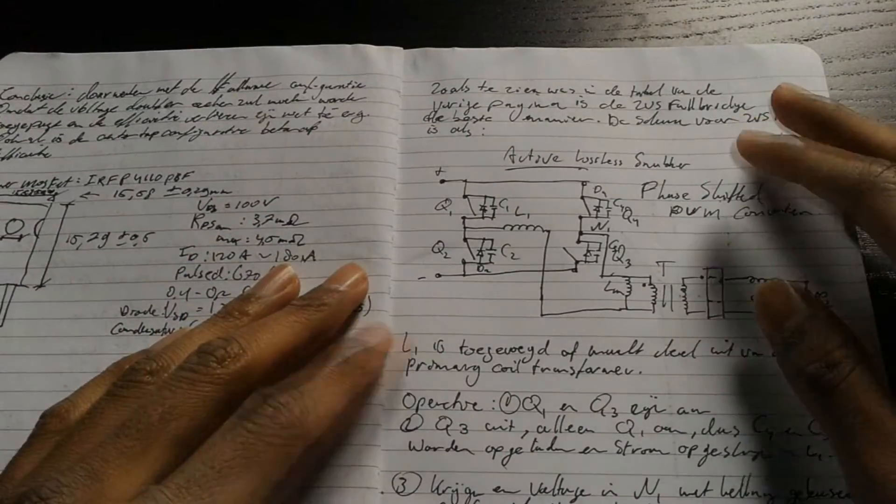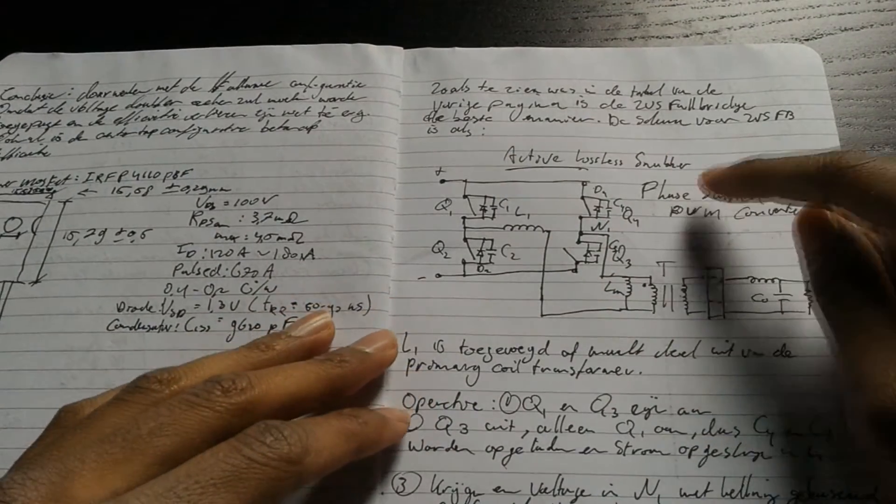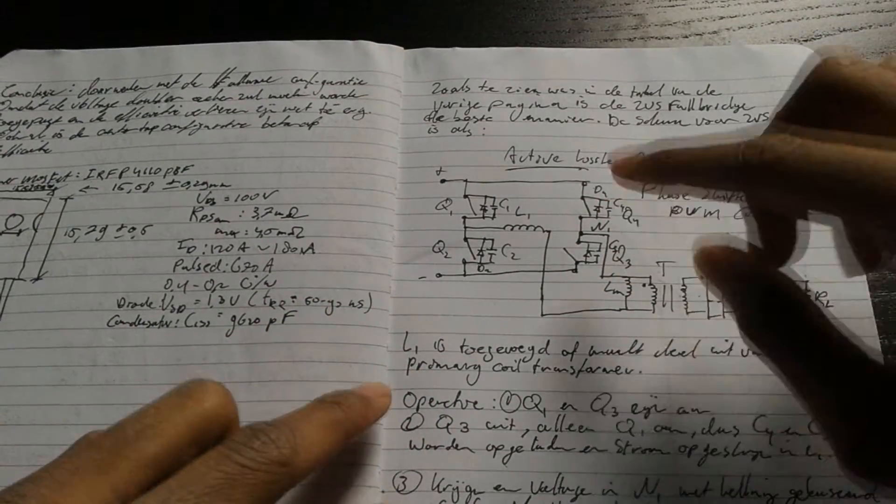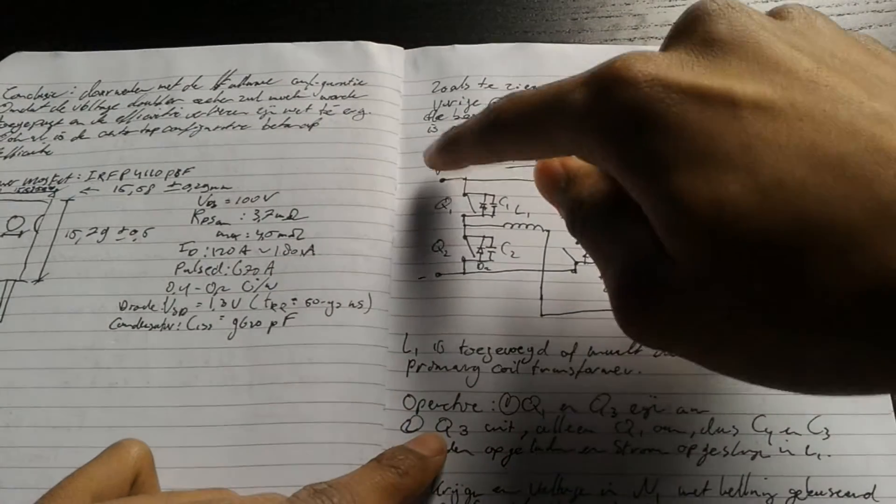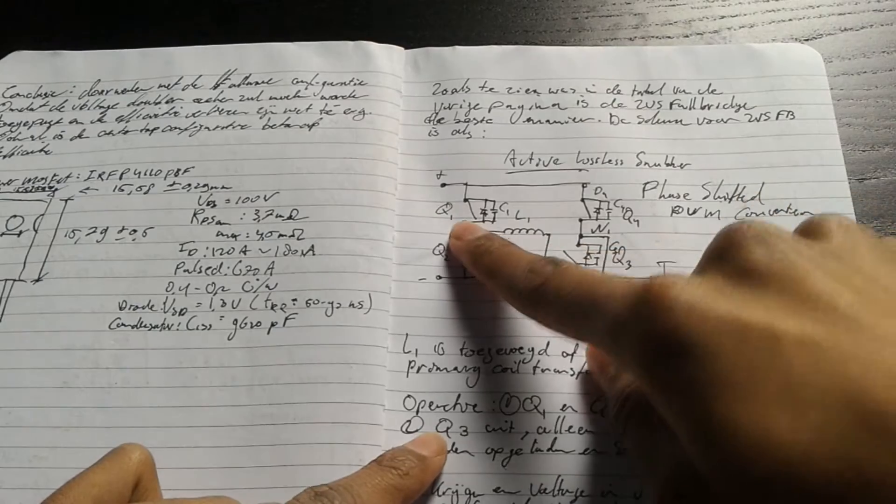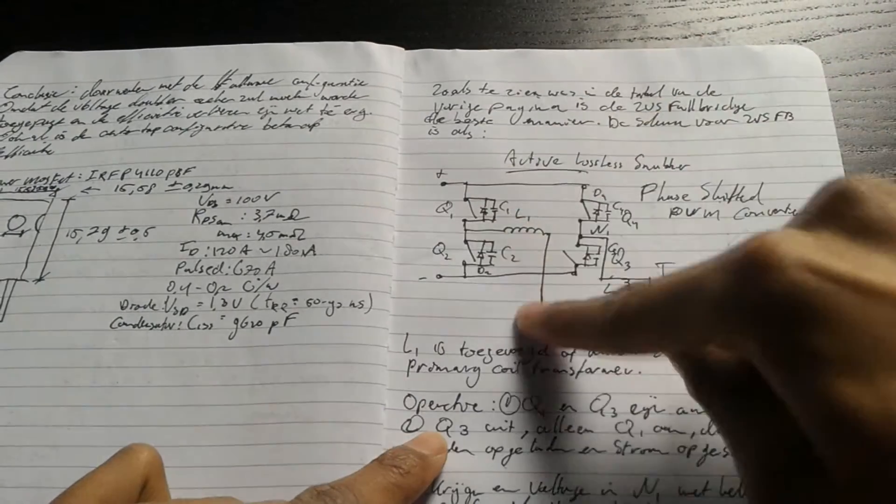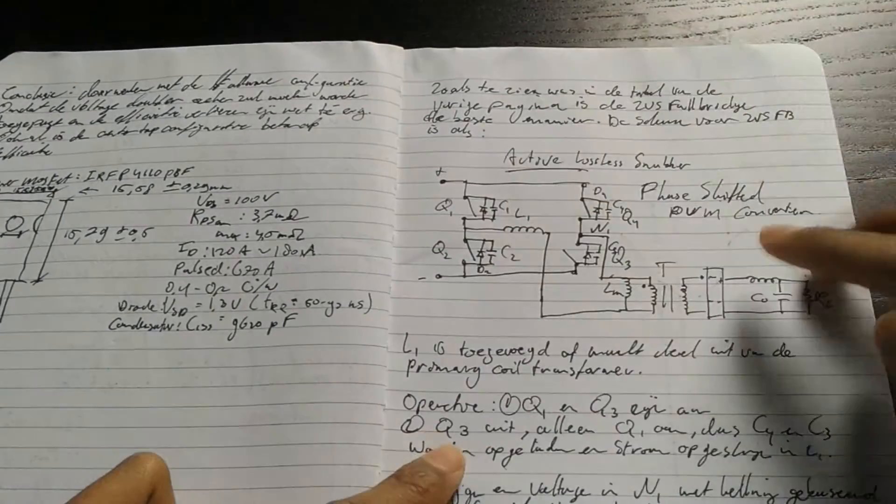That completes phase 1 to 4, which creates one half cycle on the secondary side. What happens next, or what we have now, is that Q1 was on and Q4, which creates this half cycle.